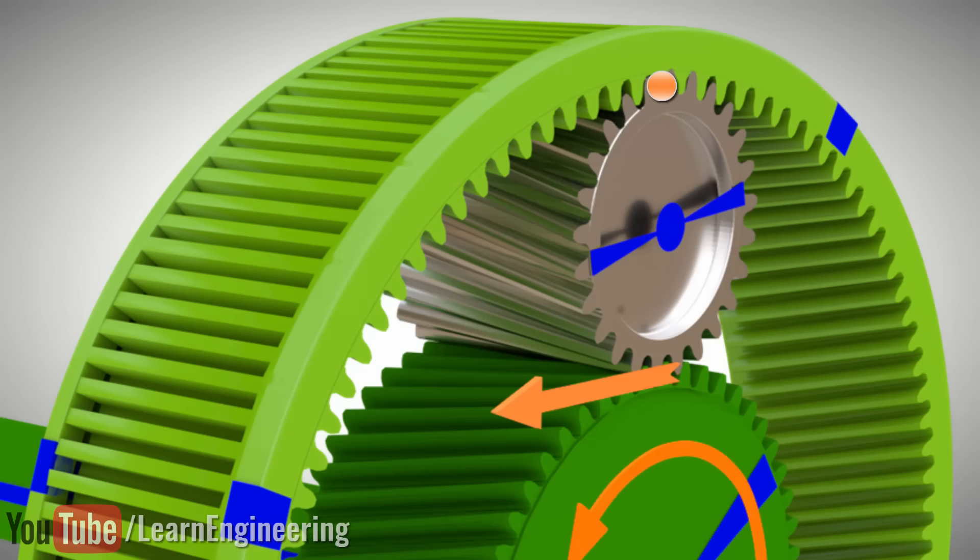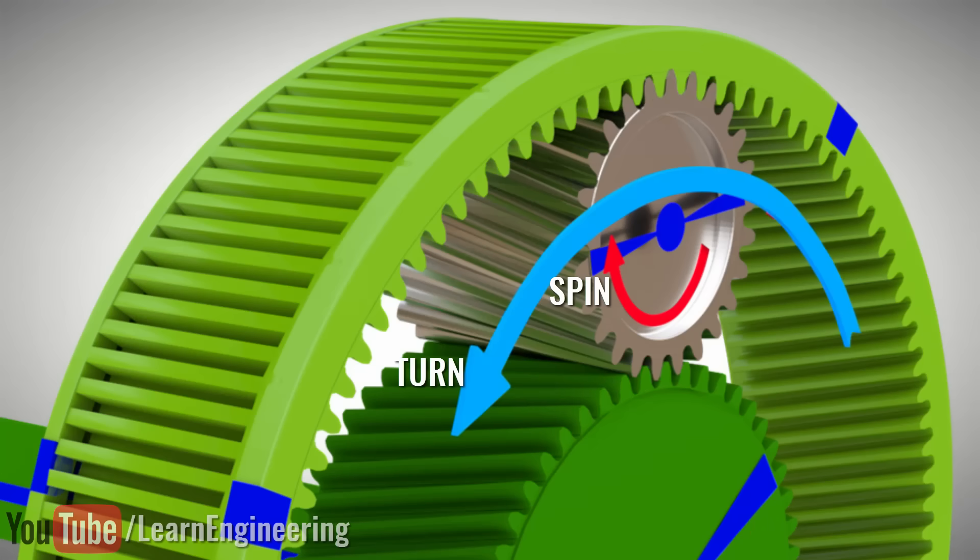There is only one way. The planet gear should spin as well as turn. The spinning will produce velocities in opposite directions at the top and bottom points as shown, whereas the turning produces unidirectional velocities. At the top, the spinning and turning velocities are in opposite directions, so the velocity of point B is zero. At the bottom, they get added up.